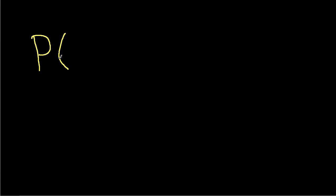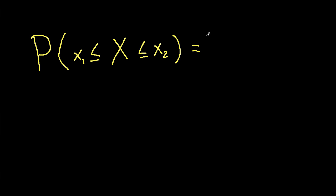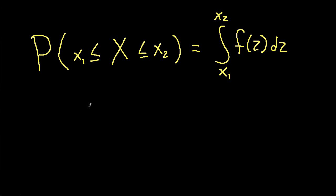We can use these relationships to compute the probabilities associated with a random variable. For example, to compute the probability that a random variable x falls on the interval between some value x1 and x2, this is the integral from x1 to x2 of the density function, where z is a dummy variable of integration.